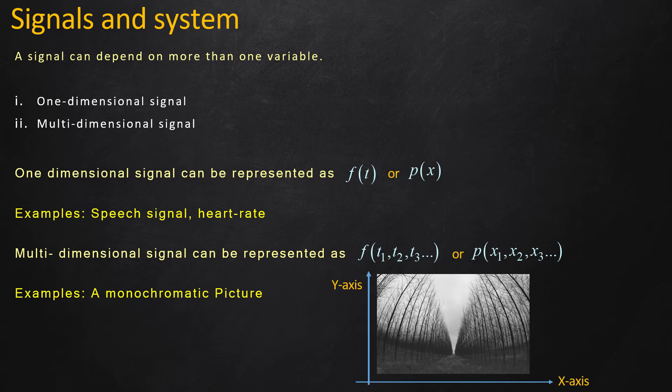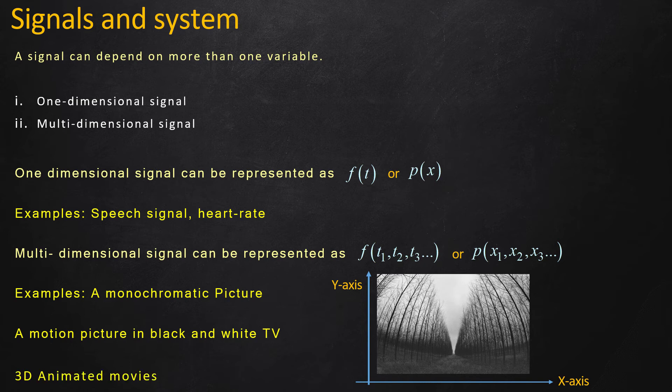An example of a three-dimensional signal is a motion picture in black and white TV. A black and white image is a two-dimensional image, so a motion picture in black and white TV is created when a two-dimensional image is moved over the third dimension, time. An example of a four-dimensional signal is 3D animated movies.